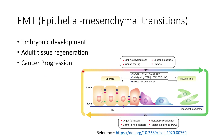During cancer progression, this transition is highly dysregulated. The characteristics of epithelial cells start to decrease — adherent junctions start to reduce, and E-cadherin, which helps epithelial cells bind to each other as discussed in previous videos, also starts to decrease. Other associated factors similarly begin to decline.